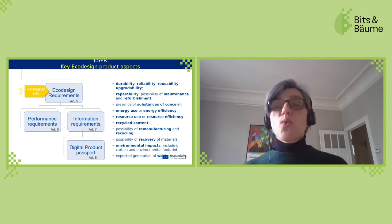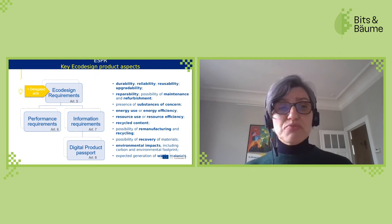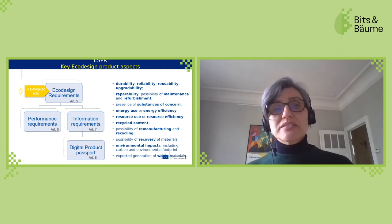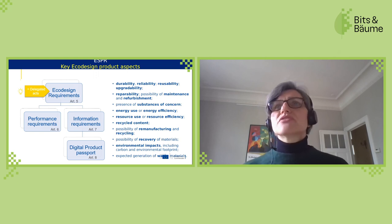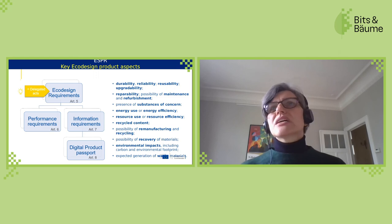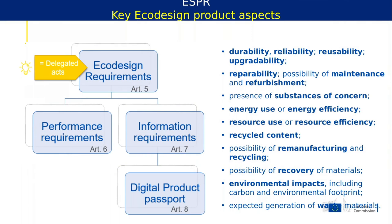There will also be performance requirements specifying how the product needs to work. The other big pillar is information requirements to make more visible, for example, recycled content and the possibility of remanufacturing and recycling. Recyclers in the end need to know what materials are in a product and how they can possibly recover those materials. The end-of-life and waste phase should also be informed about. For a couple of products there will be the obligation to set up digital product passports, which will still need a little time to develop.